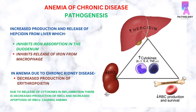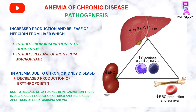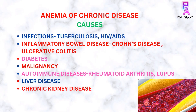In anemia of chronic disease, there is release of inflammatory cytokines which impairs the erythroid proliferation and promotes apoptosis of the RBCs, contributing to anemia.